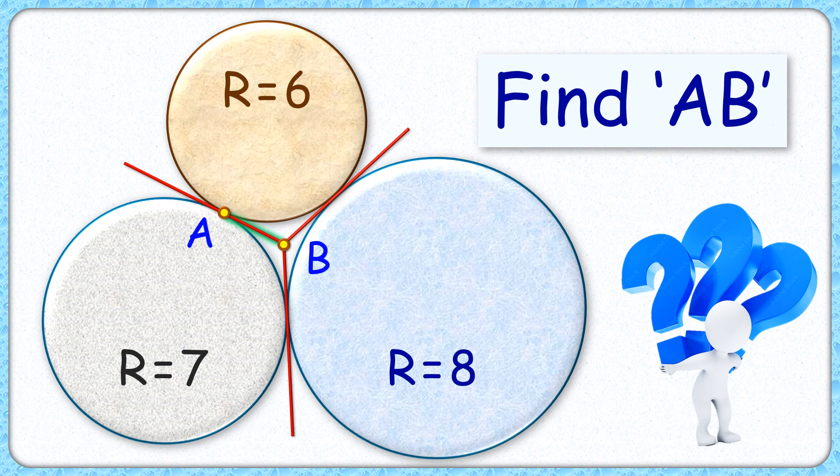In this interesting question, we have three circles of radius 6 cm, 7 cm, and 8 cm touching each other. These are the three common tangents drawn from the points of contact of these circles.